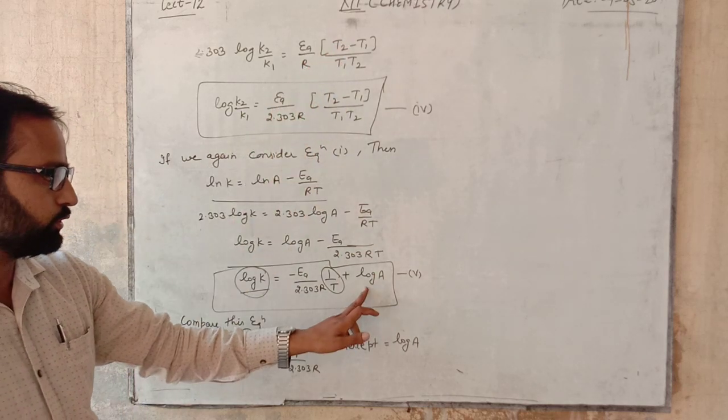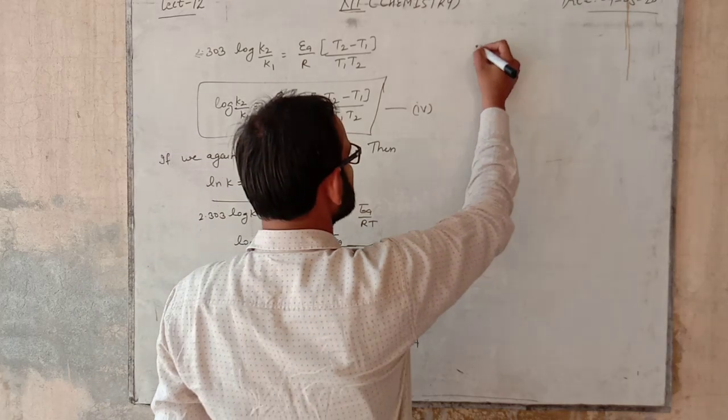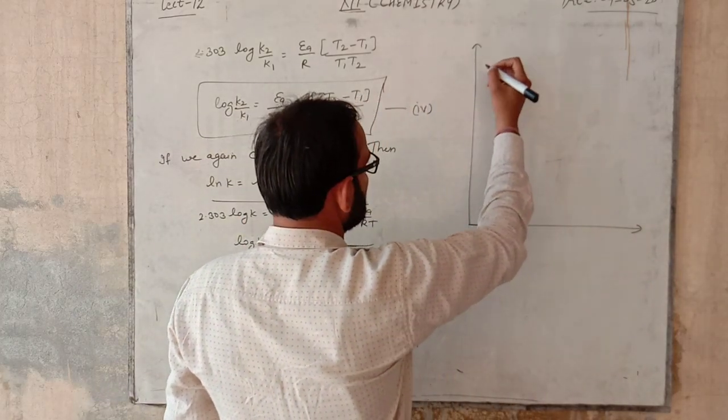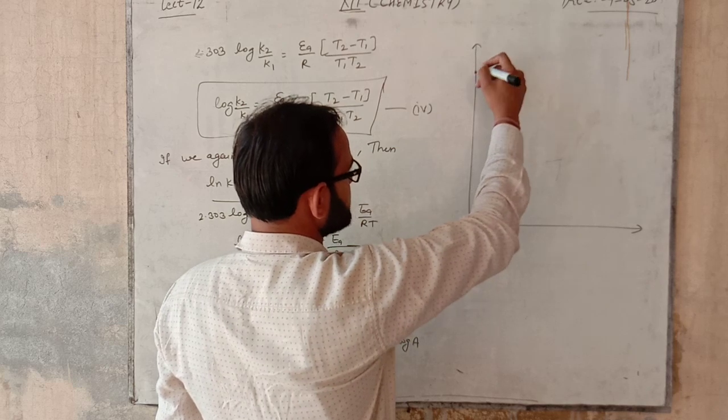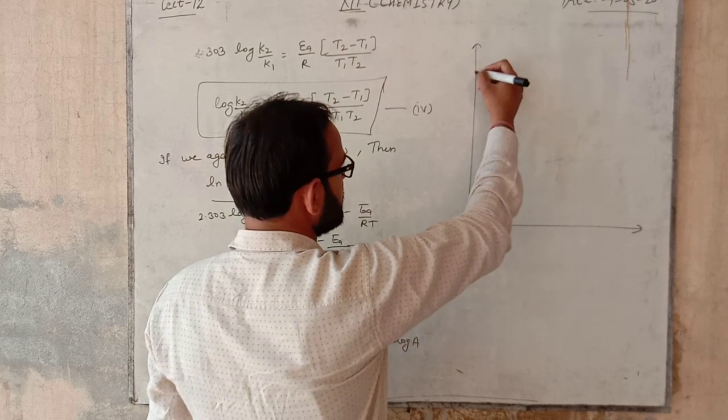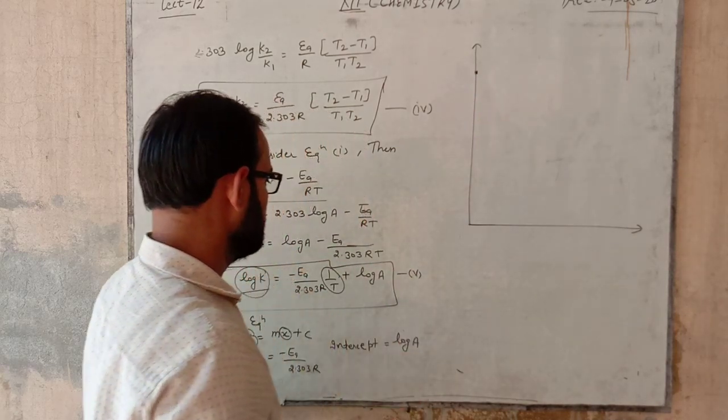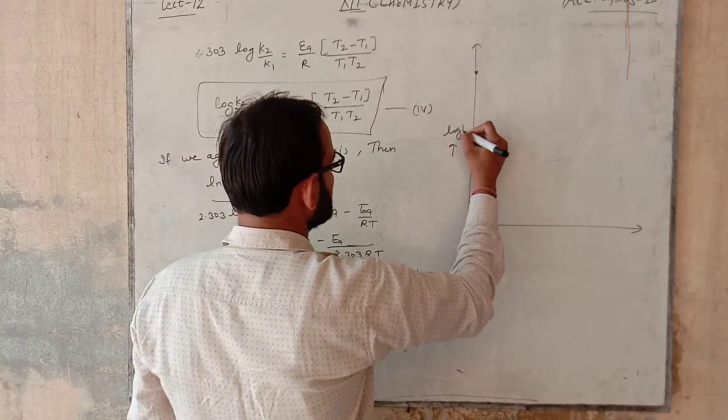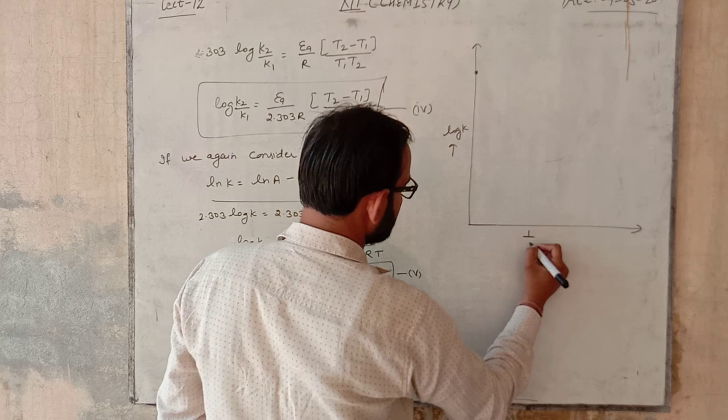The line will start from any point on y axis because of the value of intercept. The graph will be like this - it will start from some point here and the straight line will come down. Graph will be plotted between log k and 1 by T.